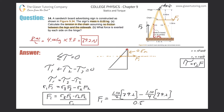Now we can calculate. F1 equals (1.1 divided by 2 times 39.2) minus (1.1 divided by 4 times 39.2), all divided by 0.5. We get F1 equal to 21.6 newtons. That is the tension in the chain.